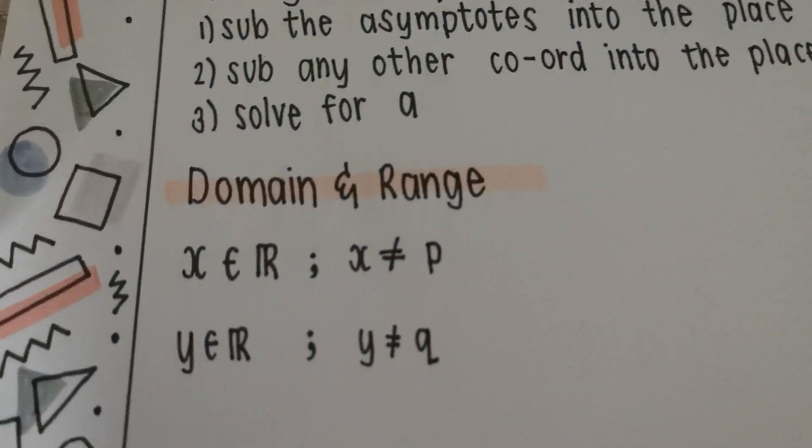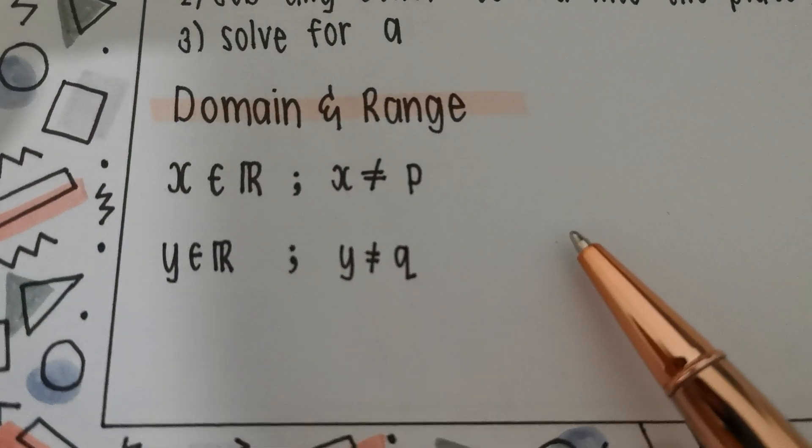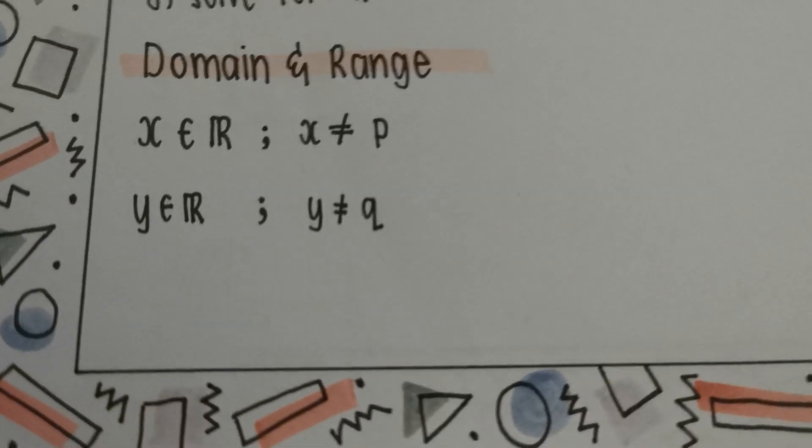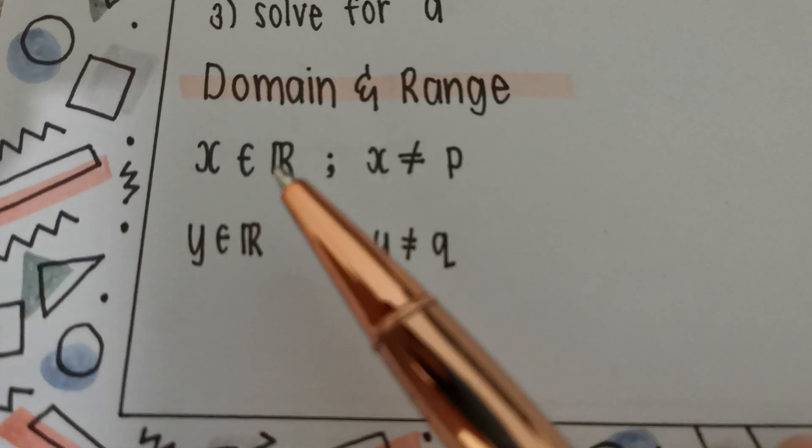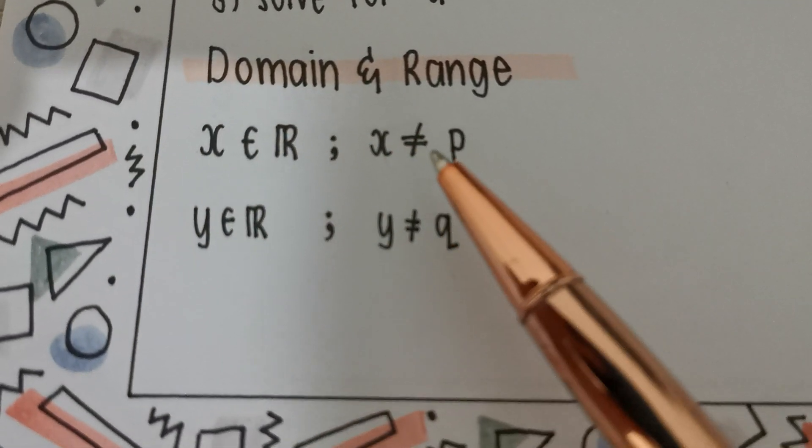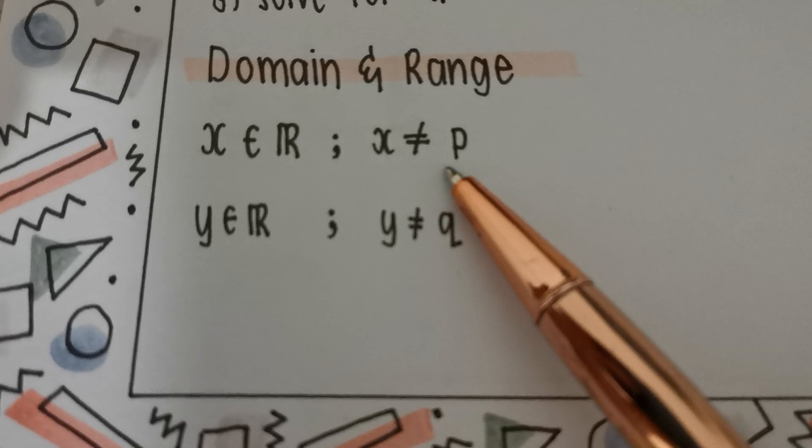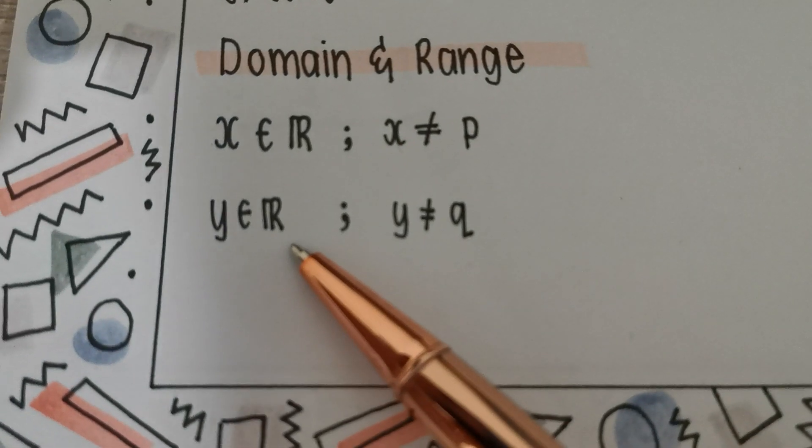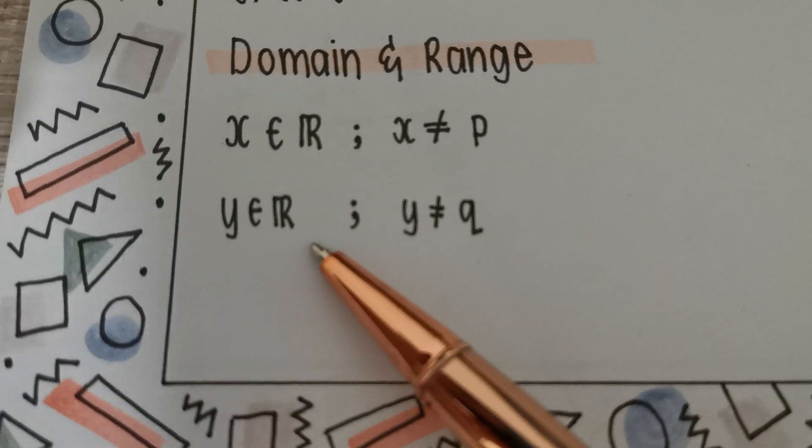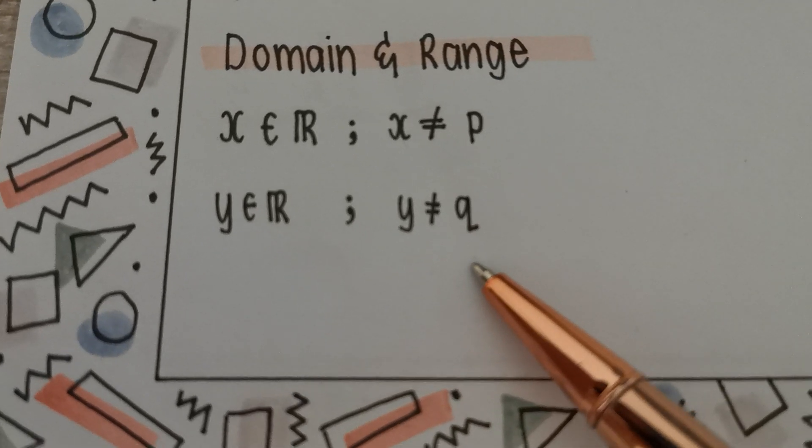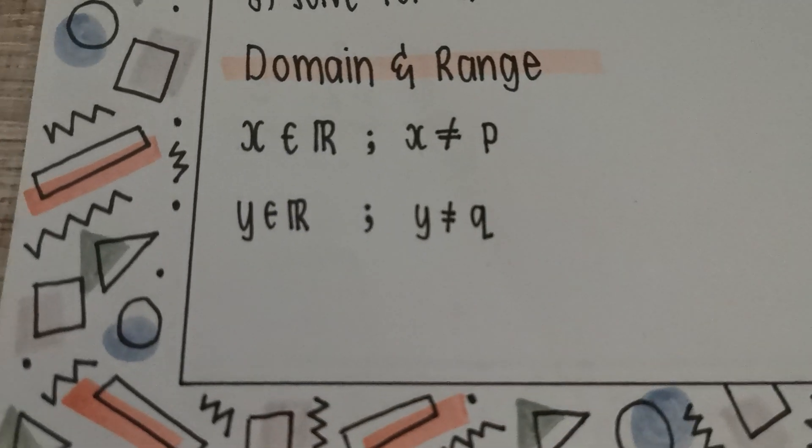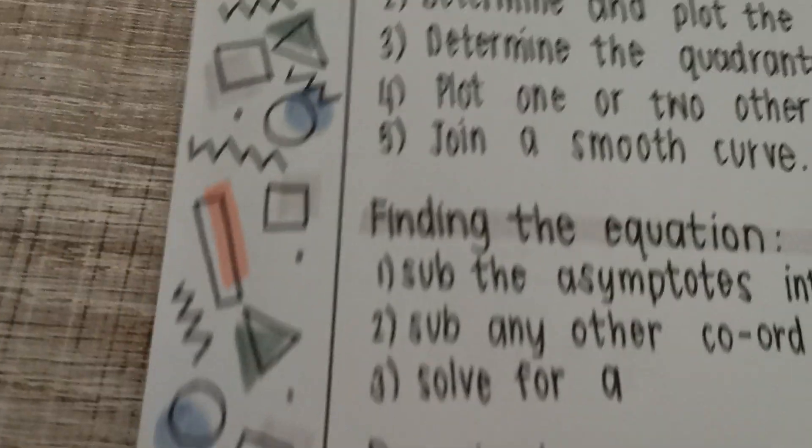Now, we are going to talk about the domain and range quickly. The domain of a particular hyperbola, x is an element of all real numbers except the p-value, which is the asymptote. And for the range, y is an element of all real numbers except the q-value. All right? And that's all that we need to know about the hyperbola.